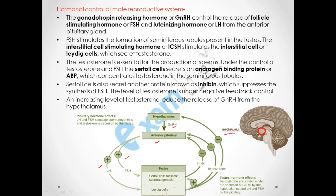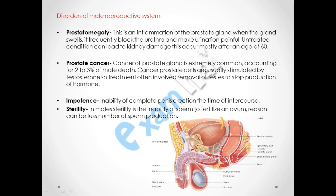When the concentration of testosterone is high, it acts as a negative feedback control. It suppresses the action of the hypothalamus and the action of LH. Additionally, the Sertoli cells release the protein inhibin, which suppresses the synthesis of FSH by the anterior pituitary gland. This is how the whole hormonal control of the male reproductive system is regulated.